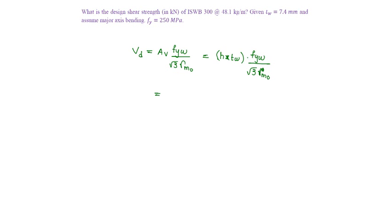For ISWB 300, overall depth is 300 mm and thickness of the web is 7.4 mm, into 250 by root 3, into gamma M0 equal to 1.1, which gives 291.3 kilonewtons.